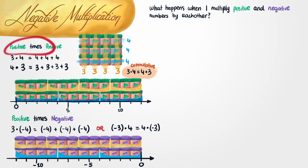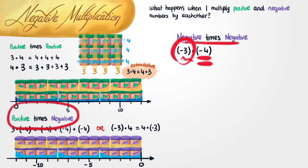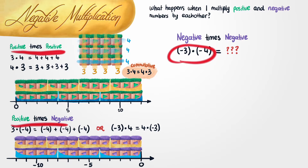Since we know how to do a positive times a positive and a positive times a negative, the last thing we need to address is how to multiply two negative numbers. This case presents us with an immediate issue — we're saying we want to add minus 4 to itself minus 3 times. That's going to need some deeper thinking. But since we already know how to multiply a positive by a positive, and a positive by a negative, it turns out that a negative times a negative is already forced upon us — we actually already know how to do this, but it's in disguise a little bit.